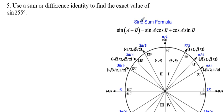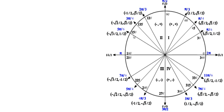In order to do this, we're going to use the sine sum formula, which states that the sine of (A + B) equals the sine of A times the cosine of B plus cosine of A times the sine of B. And we're going to make use of our unit circle, which is over here.